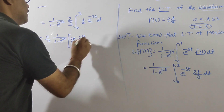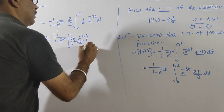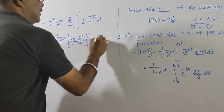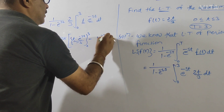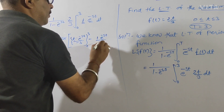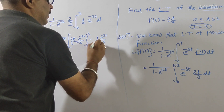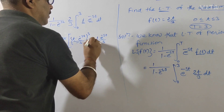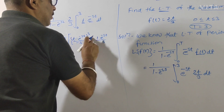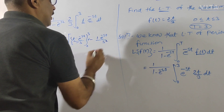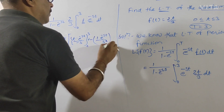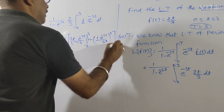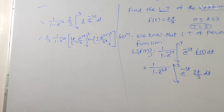और इसकी limit 0 to 3 होगी, minus differentiation of first × integration of second. फिर से पूरे का integration करेंगे, तो minus minus plus हो जाएगा, फिर integration करेंगे तो यह s² हो जाएगा, और यहाँ भी 0 to 3 लगेगा. minus e^(-st)/s² minus में आएगा.